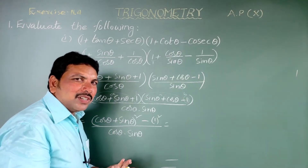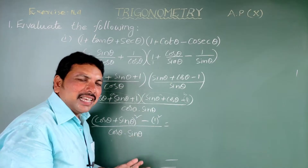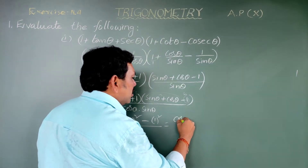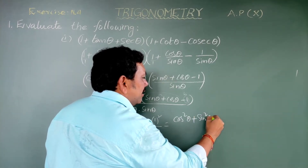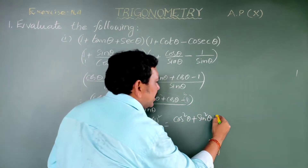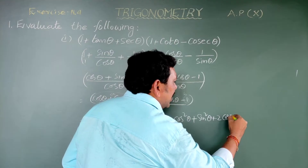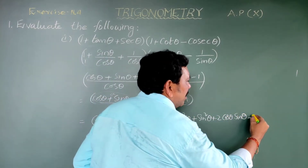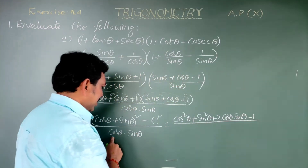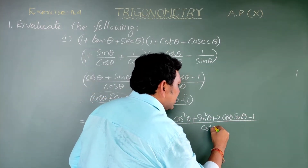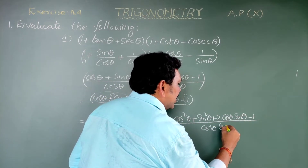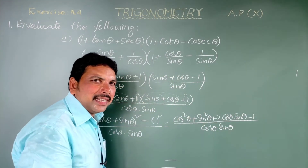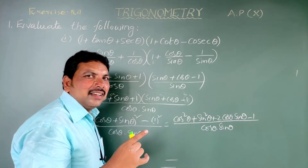This is in the form of (a+b)², which means a² plus b² plus 2ab. So we can write: cos²theta plus sin²theta plus 2 cos theta sin theta, minus one square, divided by cos theta into sin theta.